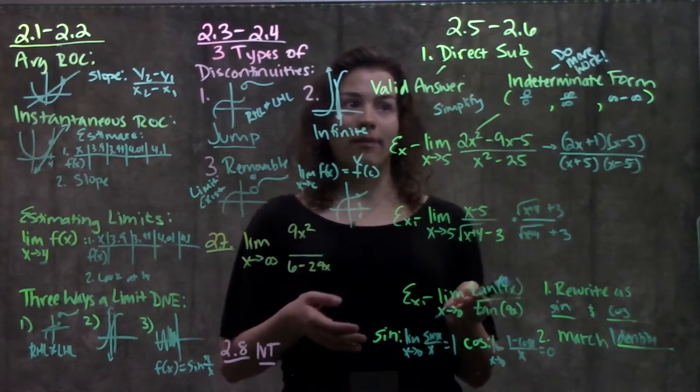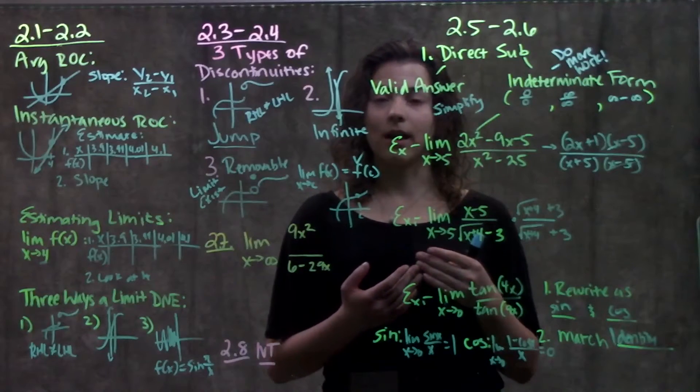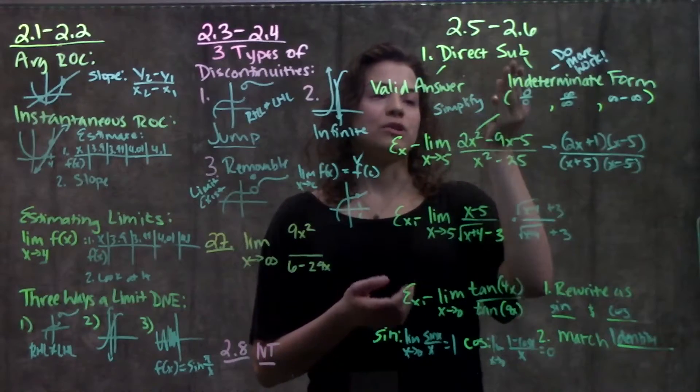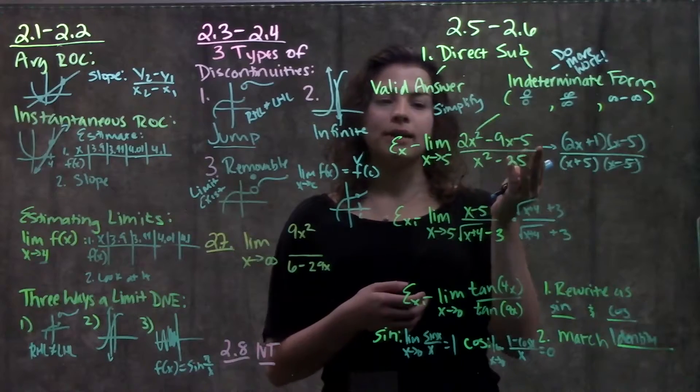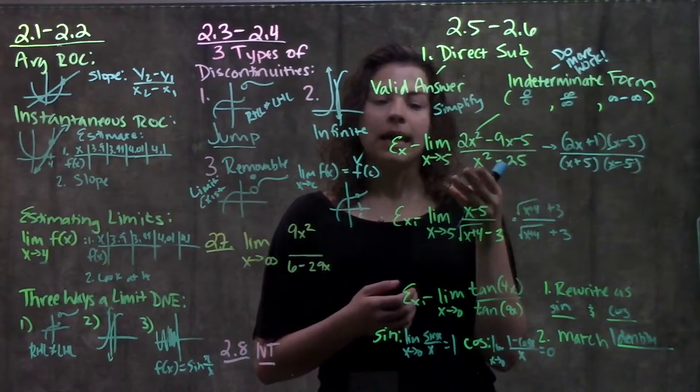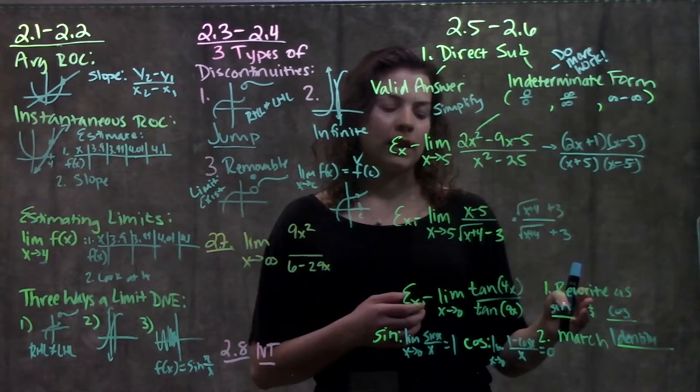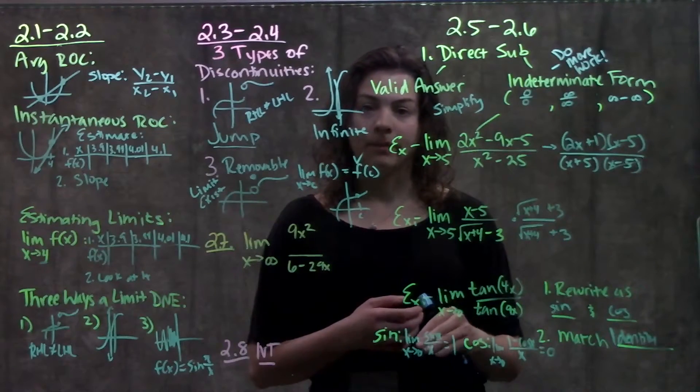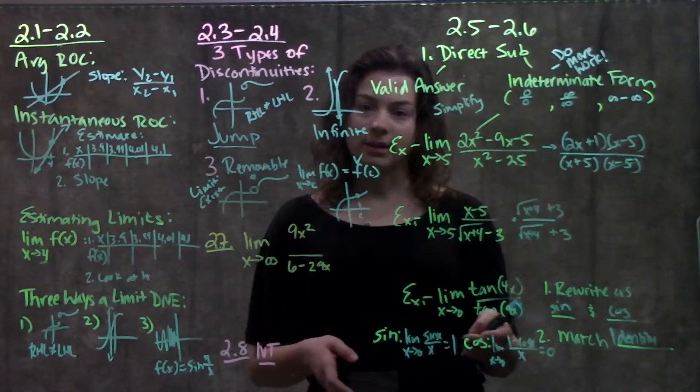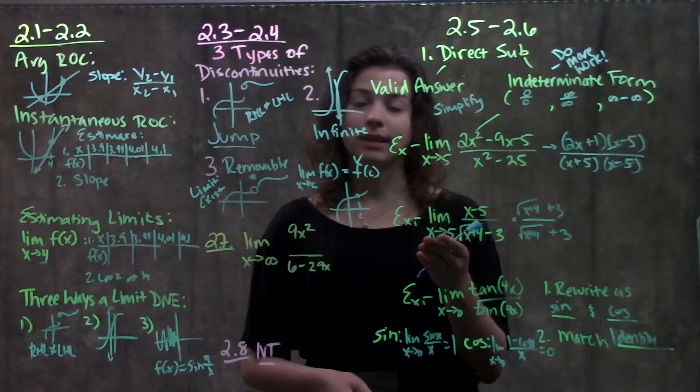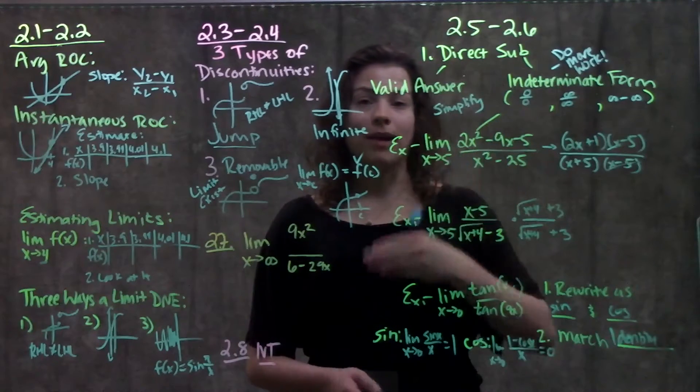So 2.5 to 2.6, we learned how to solve limits directly using algebra. We always try direct substitution first, but a lot of times we'll need to simplify the function, either by factoring it, multiplying by the conjugate, or simplifying the trig and trying to get it to match an identity, so that after we do all these steps, we can try direct substitution again and hopefully get a valid answer.